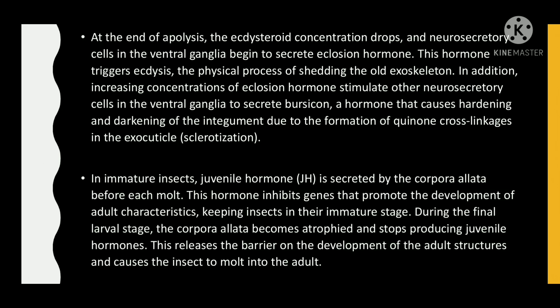At the end of apolysis, the ecdysteroid concentration drops and the neurosecretory cells in the ventral ganglia begin to secrete eclosion hormone. This hormone triggers ecdysis, the physical process of shedding the old exoskeleton. In addition, increasing concentration of eclosion hormone stimulates other neurosecretory cells in the ventral ganglia to secrete bursicon, a hormone that causes hardening and darkening of the integument due to the formation of quinone cross-linkages in the exocuticle, i.e., sclerotization.